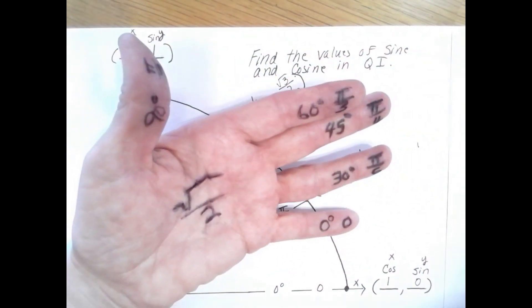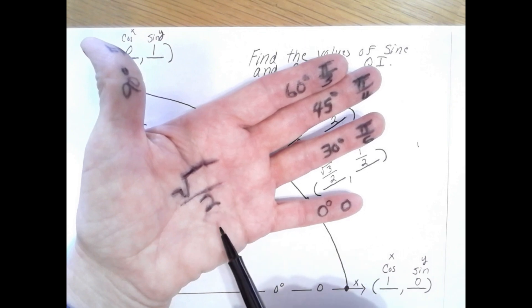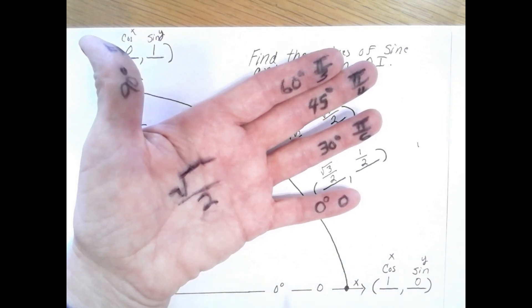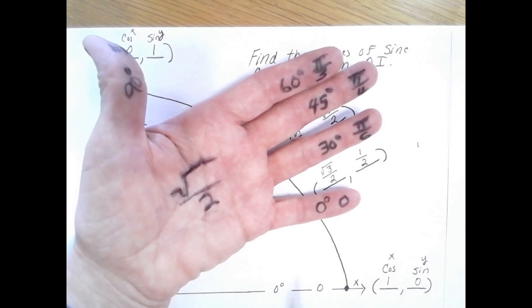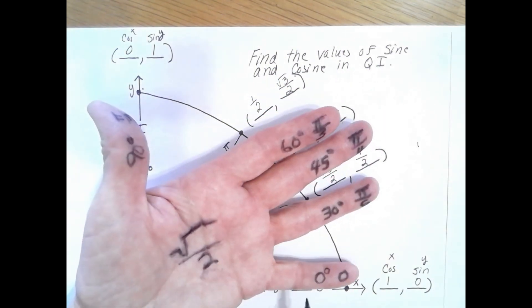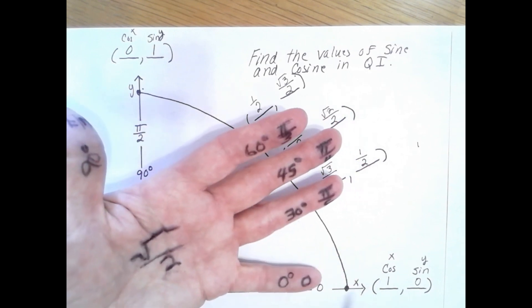In the palm of my left hand I have written square root over two, and on my fingers I have written the degrees and radian measures that correspond to quadrant one of the unit circle. You can see that on my pinky finger I have zero degrees or zero radians which corresponds to the x-axis.